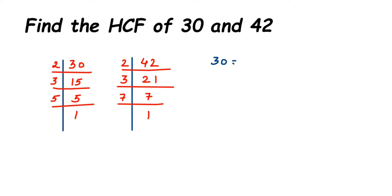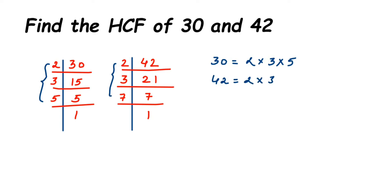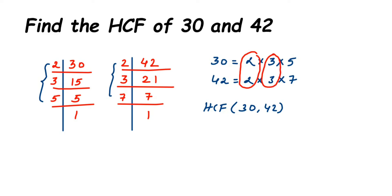Write down the prime factors of each number separately. 30 = 2 × 3 × 5, and 42 = 2 × 3 × 7. Now observe: 2 is present in both, and 3 is present in both. But 5 has no matching factor in 42, and 7 has no matching factor in 30.